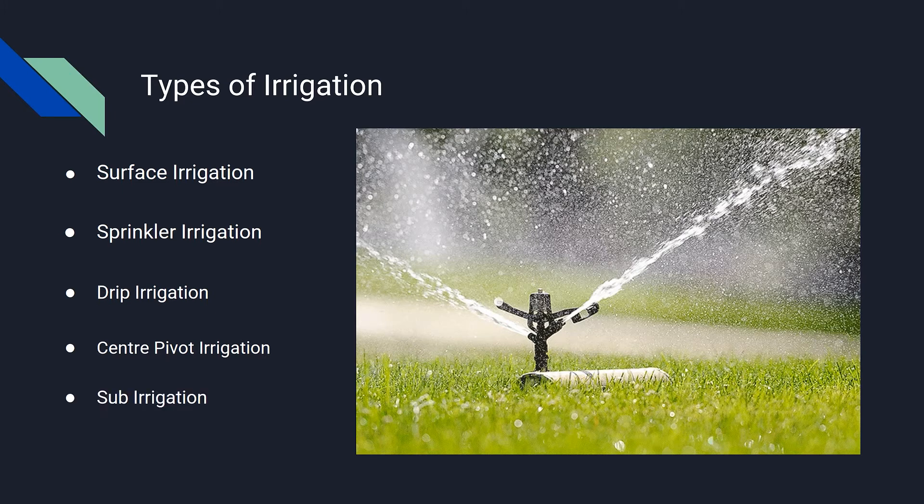Sub-Irrigation: Water is distributed through a system of pumping stations, gates, ditches, and canals by raising the water table.